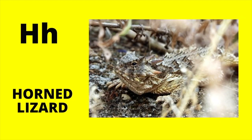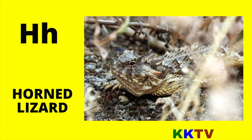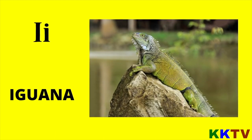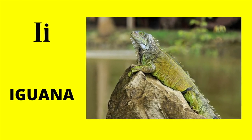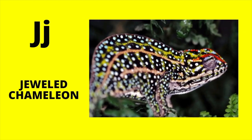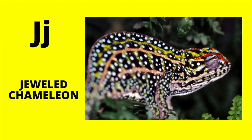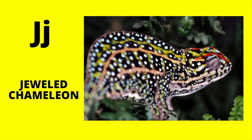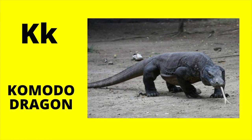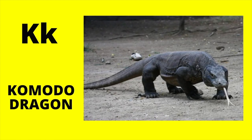H is for Horned Lizard. H, Horned Lizard. I is for Iguana. I, Iguana. J is for Jeweled Chameleon. J, Jeweled Chameleon. K is for Komodo Dragon. K, Komodo Dragon.